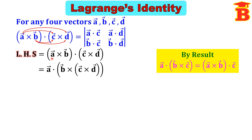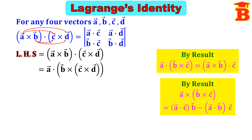So we will get A vector dot, then B vector cross the bracket (C cross D). For this bracket B cross (C cross D), we are going to use the vector triple product formula. The vector triple product is: A cross (B cross C) = (A·C)B − (A·B)C.